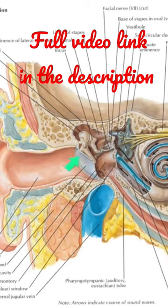This surface is the lateral surface. The lateral surface is concave and it is directed downward, forward, and laterally. As a result, the anterior and the floor of the external acoustic meatus are longer than the posterior and the roof.